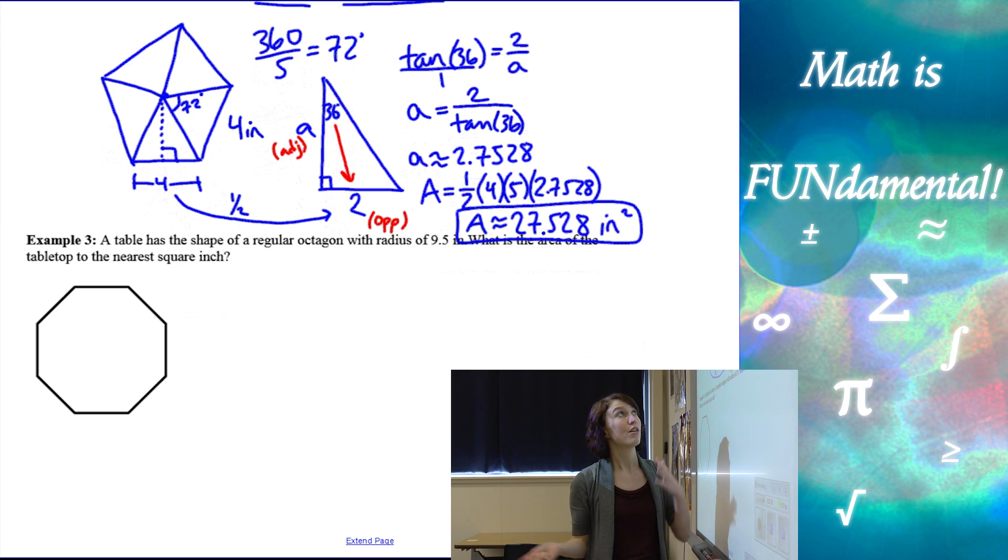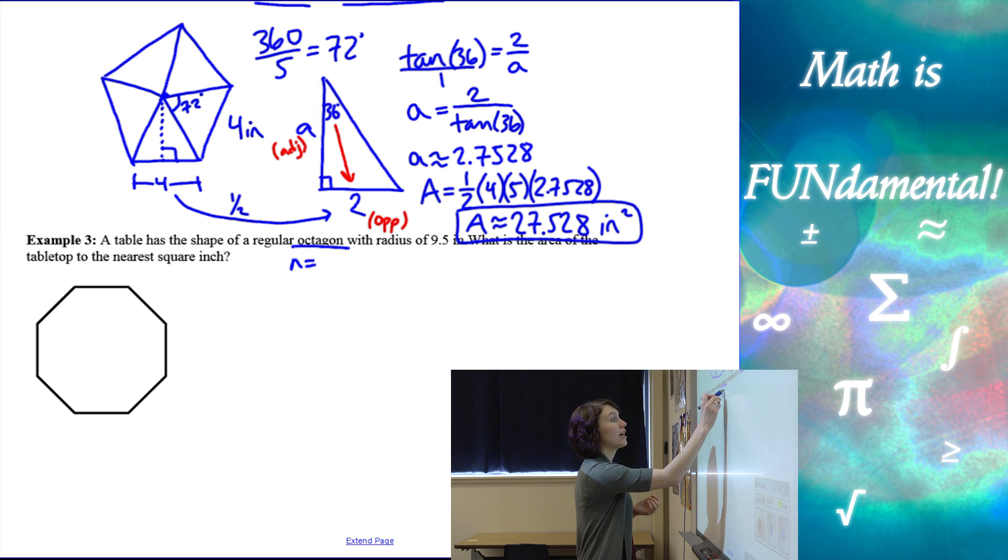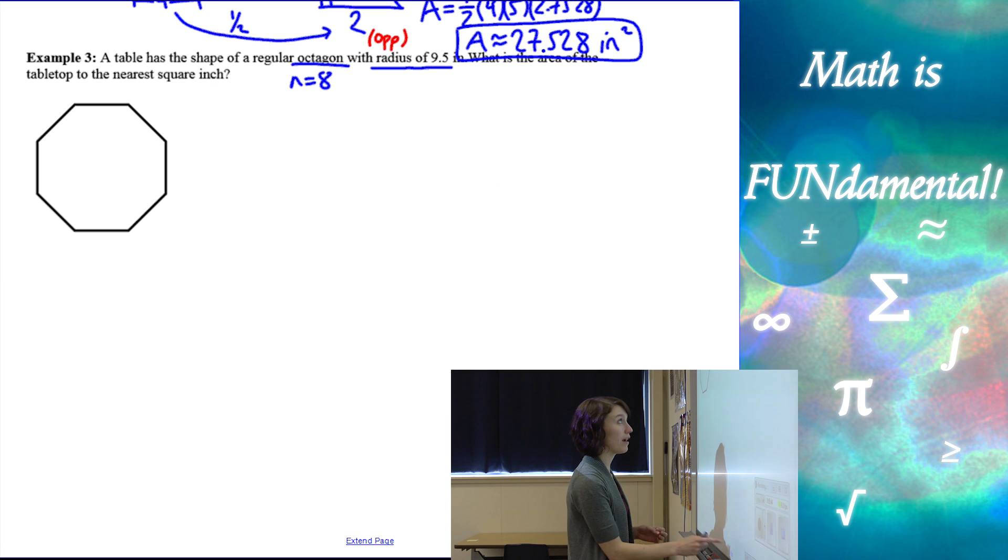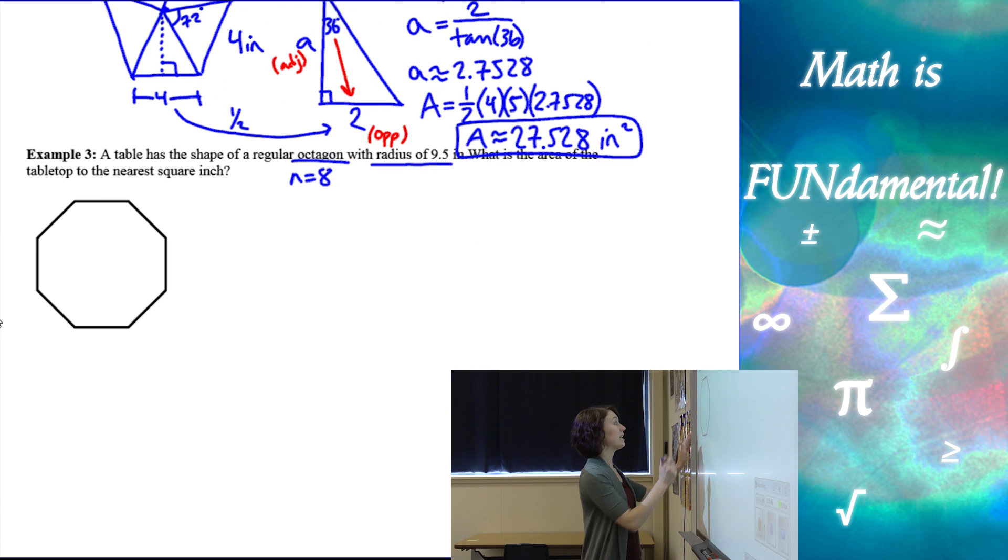Alright, so it was a little bit of a tougher example, bringing in our trigonometry to solve for the area there. Okay, let's look at our last example. A table has a shape of a regular octagon, so our sides, we have eight sides, with a radius of 9.5. So again, reviewing those terms, knowing what radius means. The radius is from the center to one of the vertices, so this is 9.5. So in this problem, we're not given the side length or the apothem. We have to find both of them to find the area.